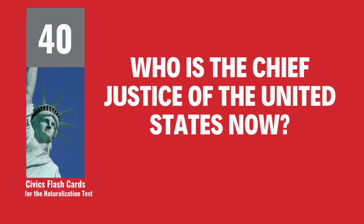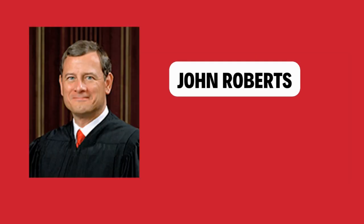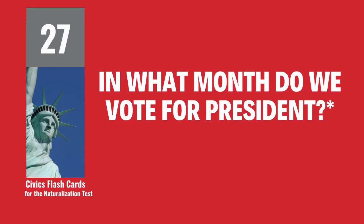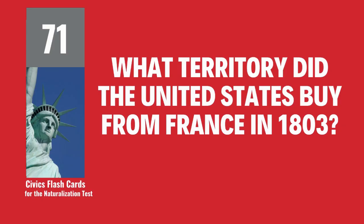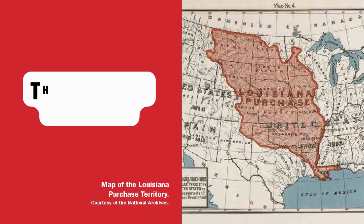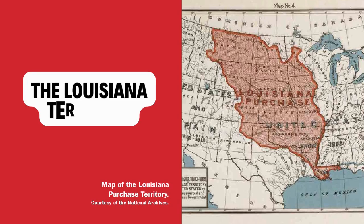Who is the chief justice of the United States now? John Roberts. In what month do we vote for president? November. What territory did the United States buy from France in 1803? The Louisiana Territory.